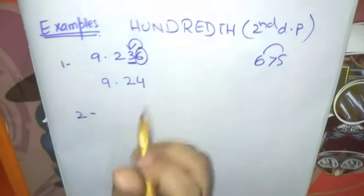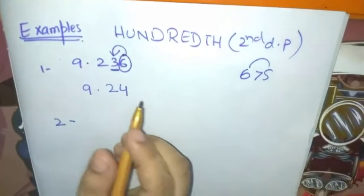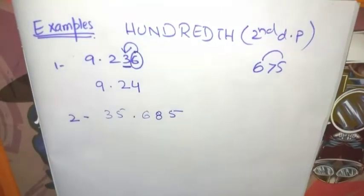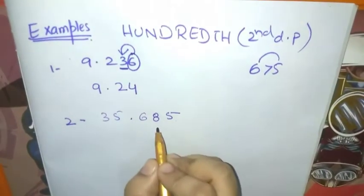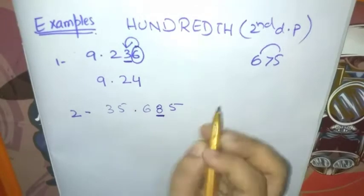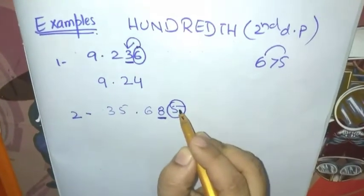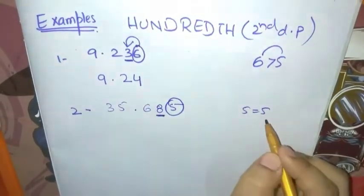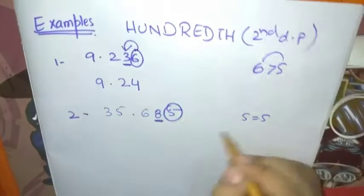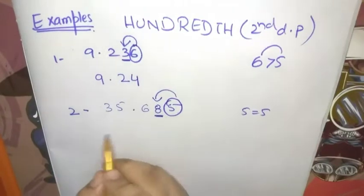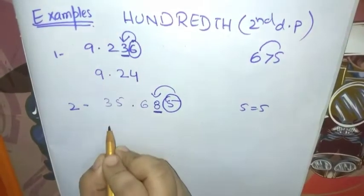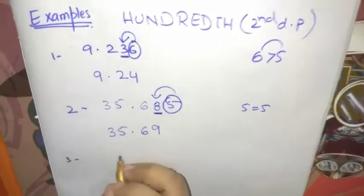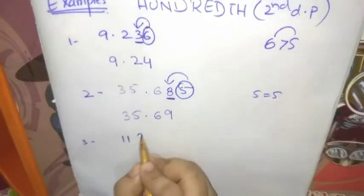The second example for the nearest second decimal place is 35.685. We underline this digit and circle the next number. We see this number is equal to 5. If the number is greater than or equal to 5, we add 1 to this digit, so the rounding off to the second decimal place becomes 35.69.